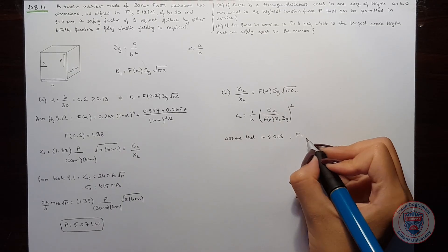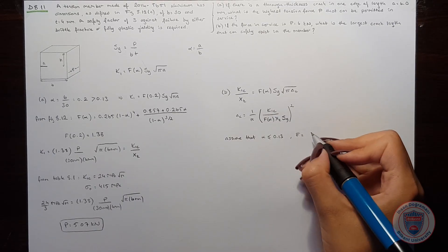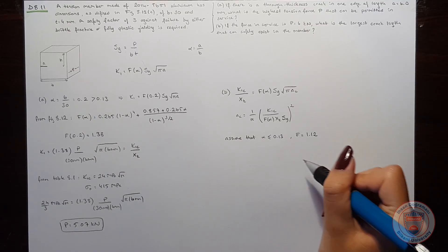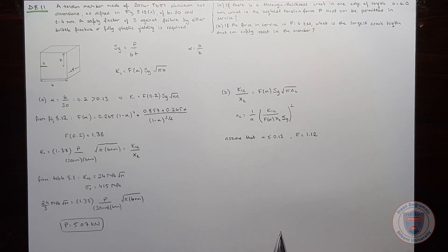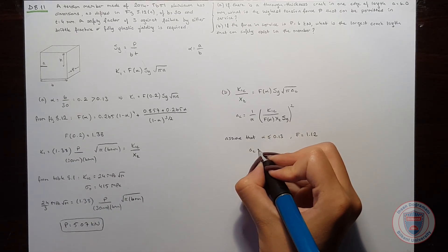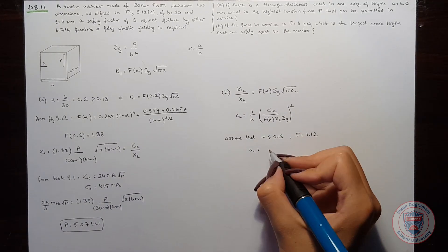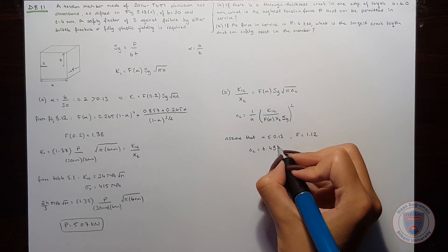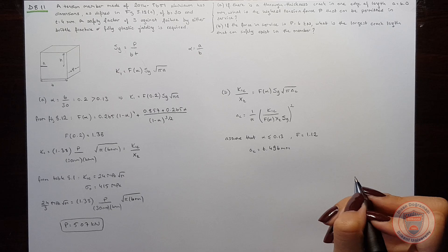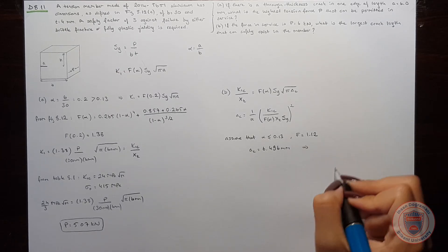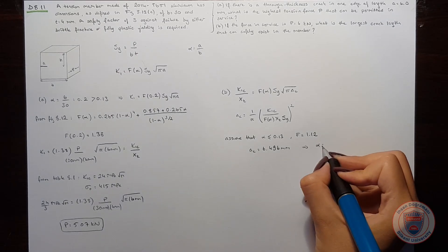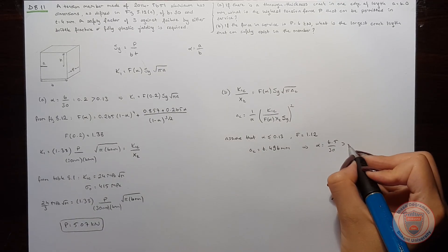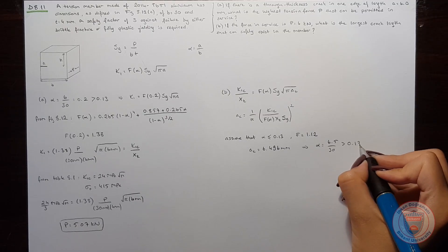So that we can use the form factor as 1.12. When we compute the equation considering f as 1.12, we get an a_c value which is equal to 6.496 mm. But when we calculate alpha, it becomes larger than 0.13.